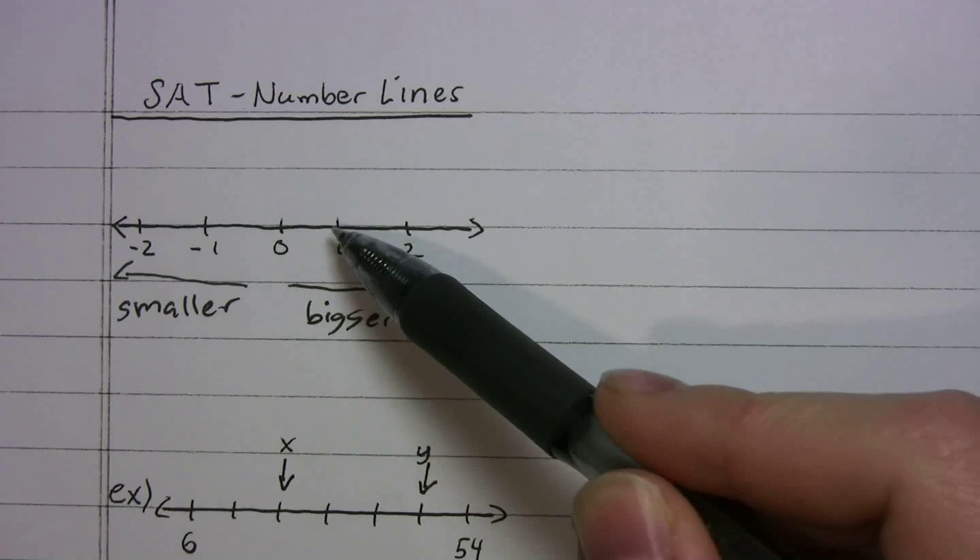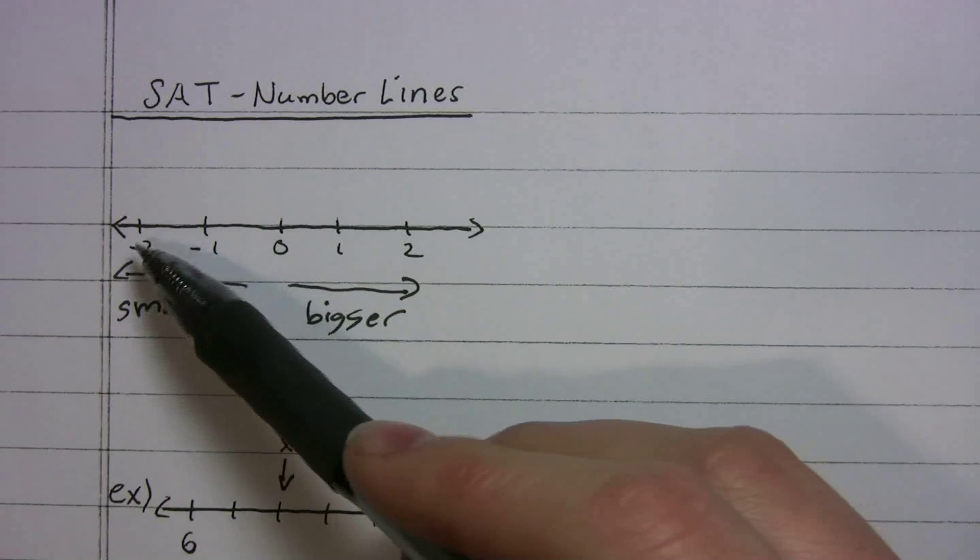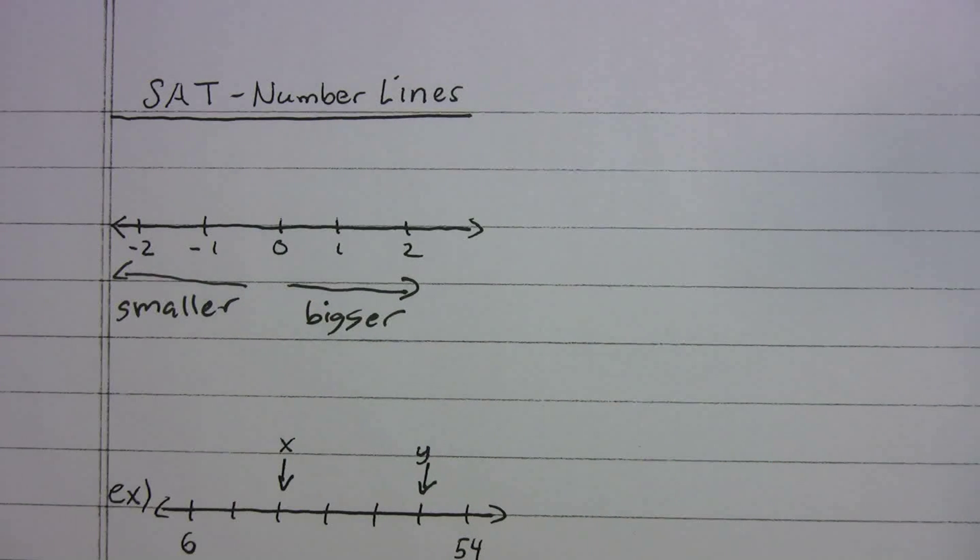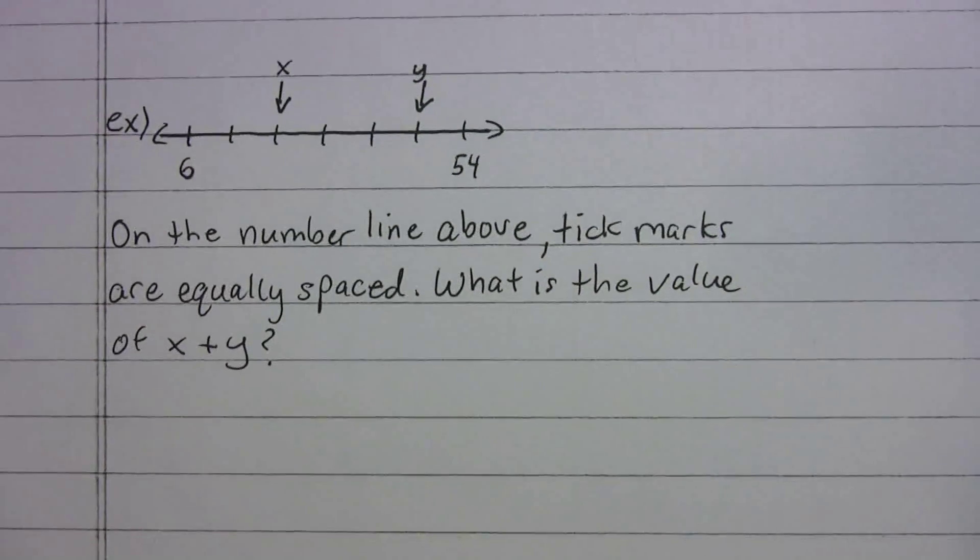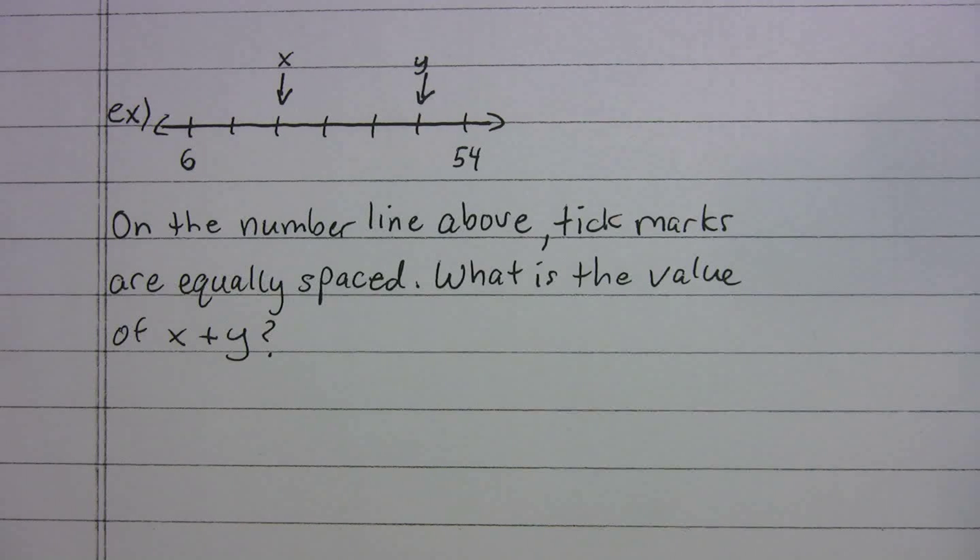Something you can't do is you can't always assume that the tick marks are evenly spaced. Usually these problems are going to have to tell you that. So they'll say it outright, the tick marks are equally spaced or evenly spaced. On the number line above, tick marks are equally spaced. What is the value of x plus y?